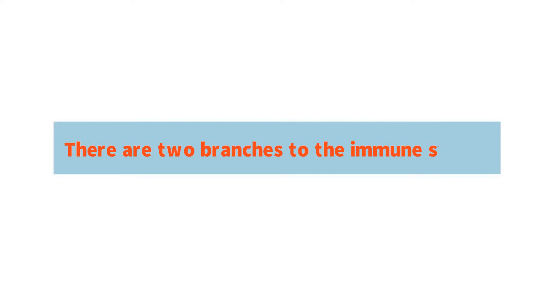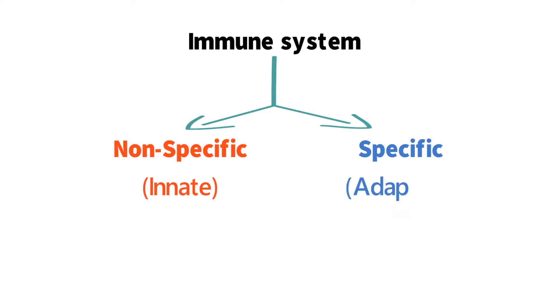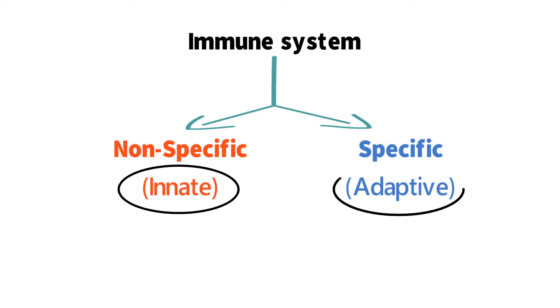Number one: there are two branches to the immune system. The two branches of the immune system can go by the names specific and non-specific, innate and adaptive, as well as some other lesser common names. For the purposes of this video, the branches will go by the names innate and adaptive.